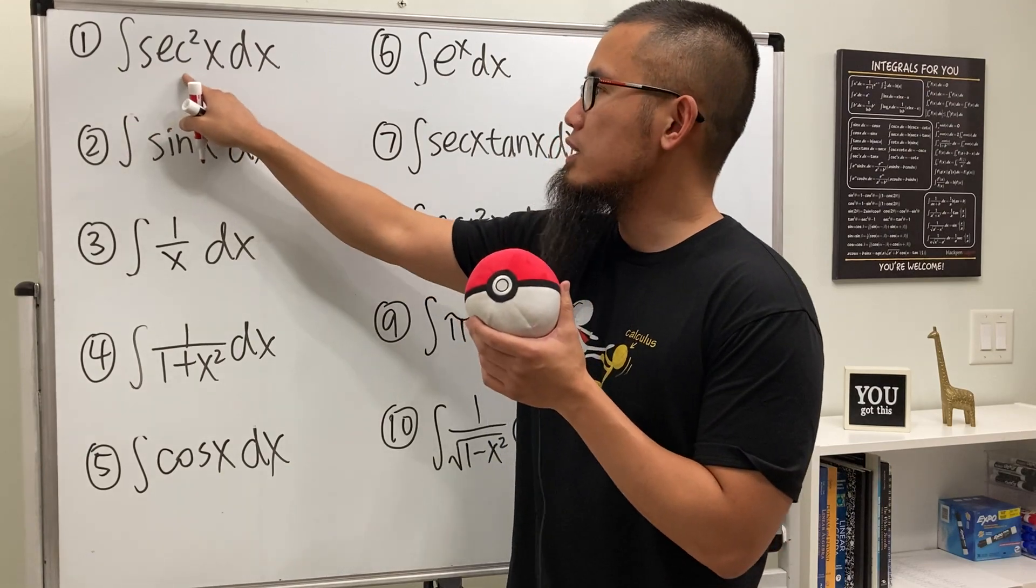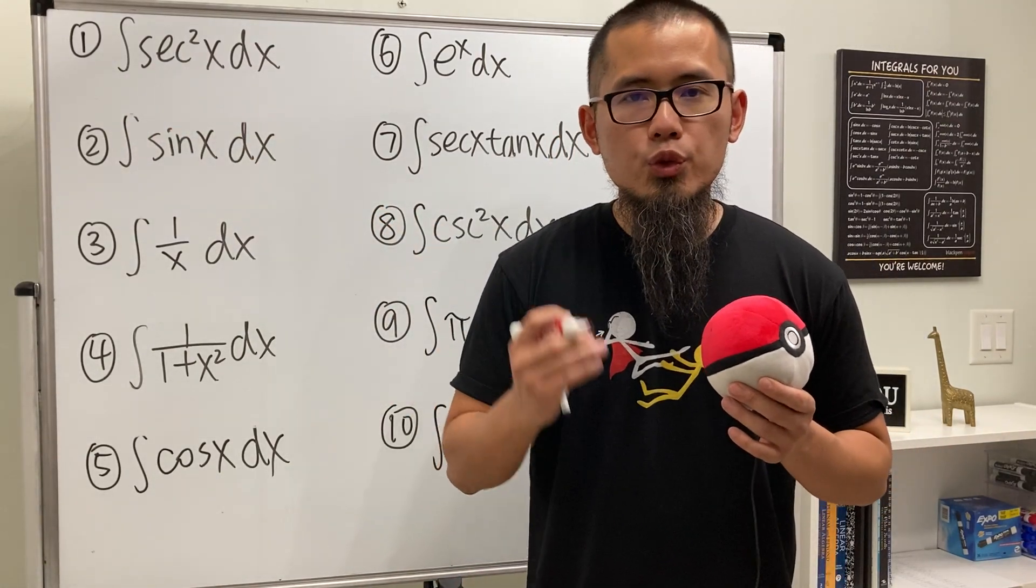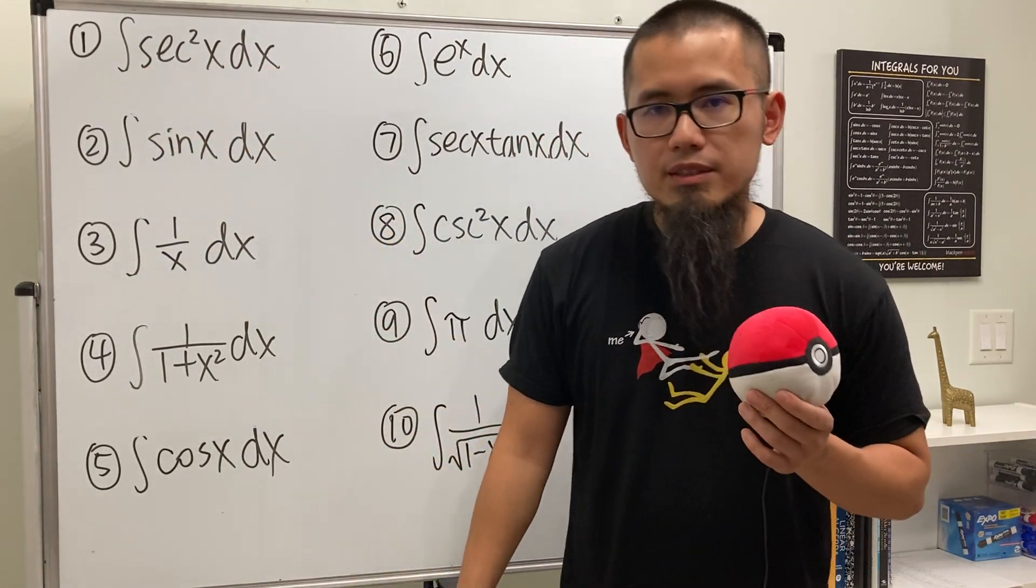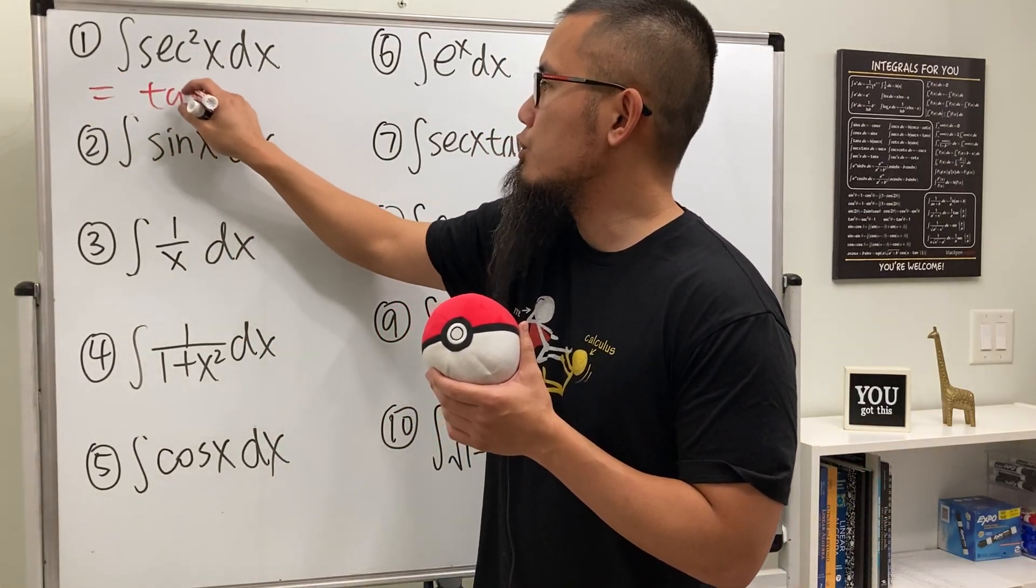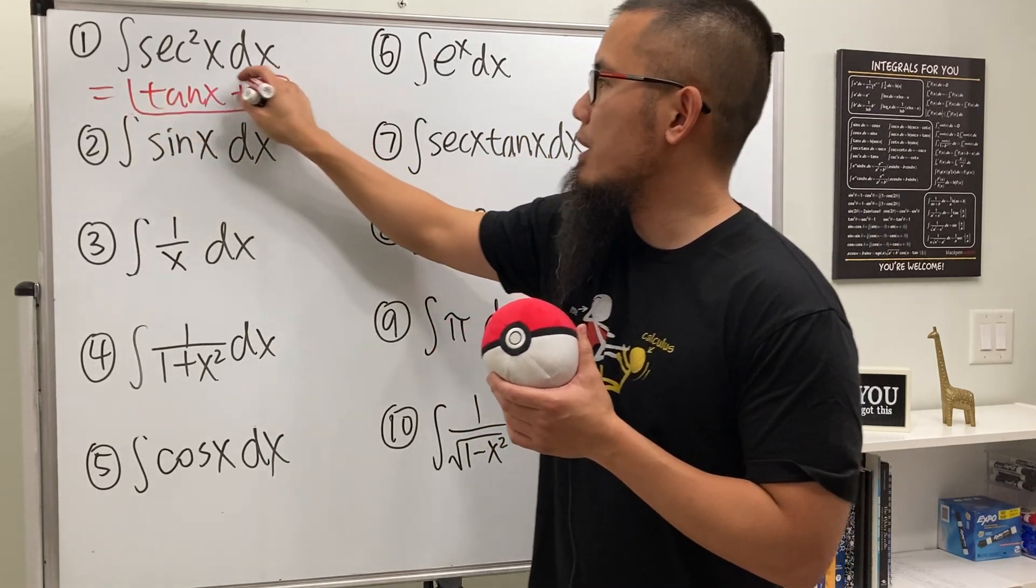Take a look at the first one. We have the integral of secant squared x. All we have to do is ask yourself, do we know the derivative of what function is going to give us secant squared x? Yes we do, and the function is tangent x. So that's the answer, we can just put that down. Don't forget the plus C. That's it, we don't have to do anything else.